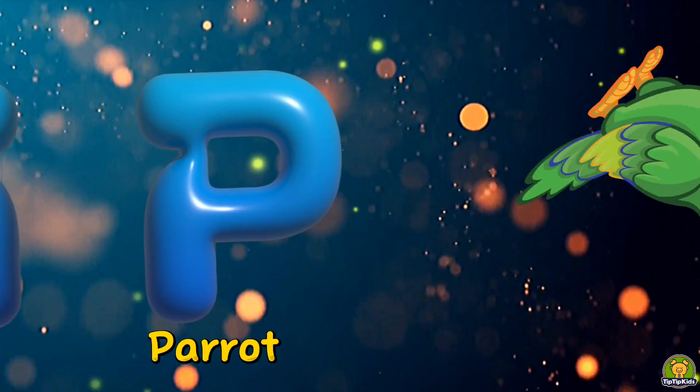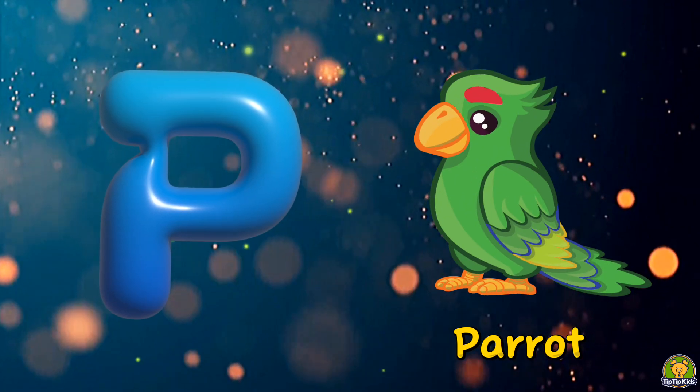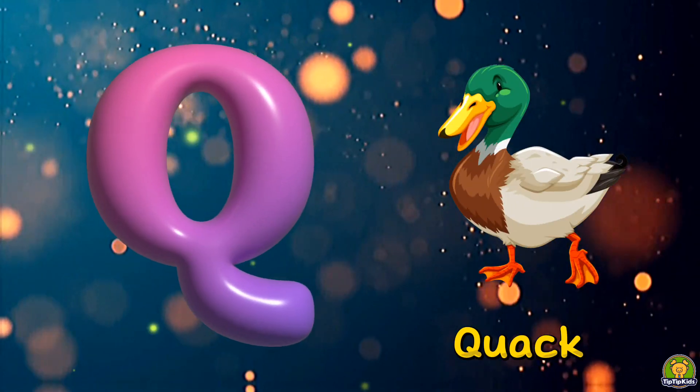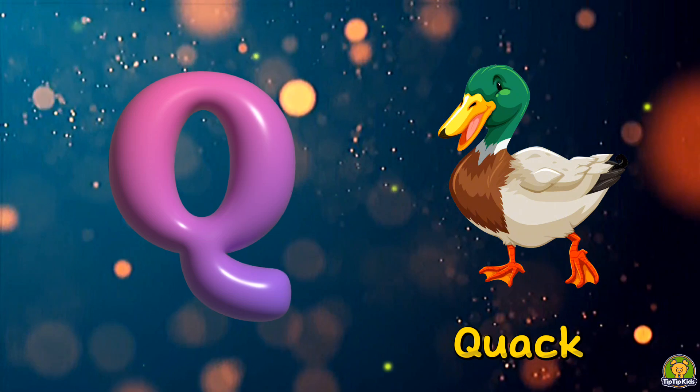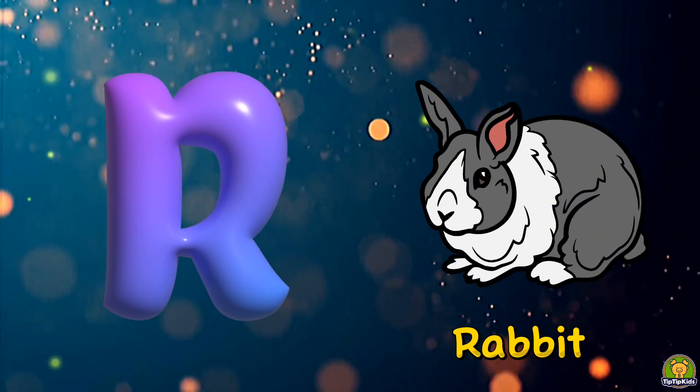P is for parrot, p-p-parrot, p-parrot. Q is for quack, q-q-quack, q-quack. R is for rabbit, rabbit, r-rabbit.